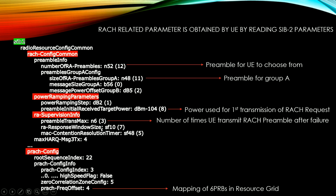Next, RA response RAR window size gives the RAR window size. MAC contention resolution timer will be provided. Max HARQ retransmission and max HARQ message transmission are also parameters. PRACH config provides information about the root sequence index and the PRACH config index. High speed flag, zero correlation zone config, and PRACH frequency offset are also included. The PRACH frequency offset basically maps to a resource grid of six RBs - six PRBs are required to initiate the RACH. You can go through all the parameters one by one.